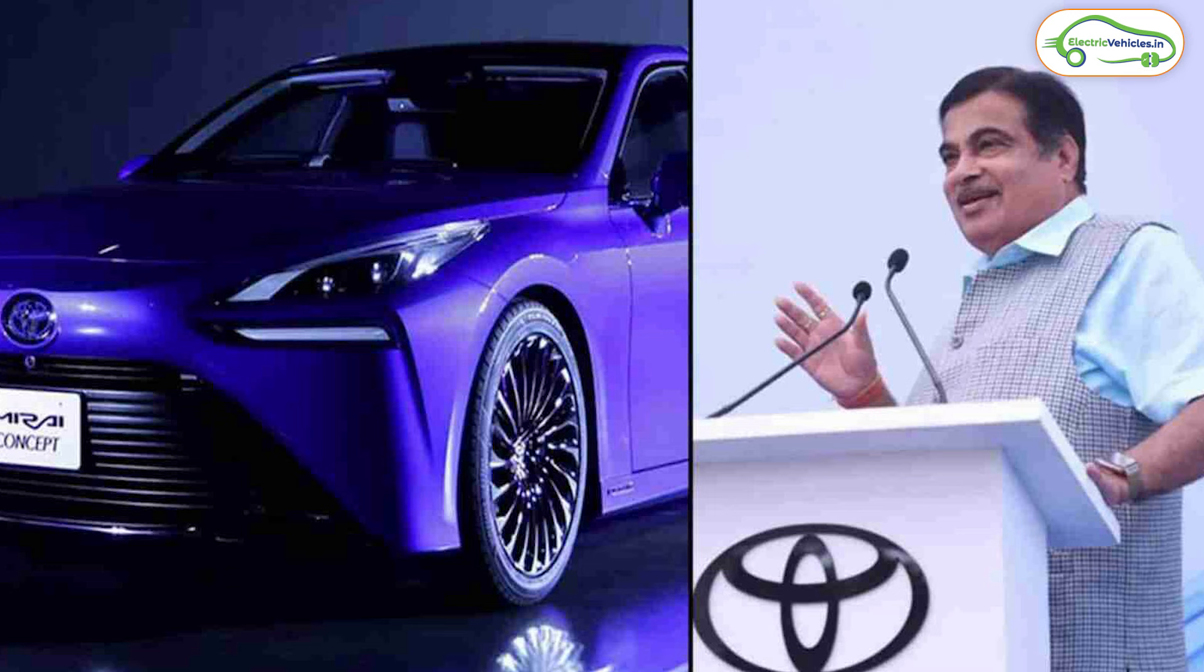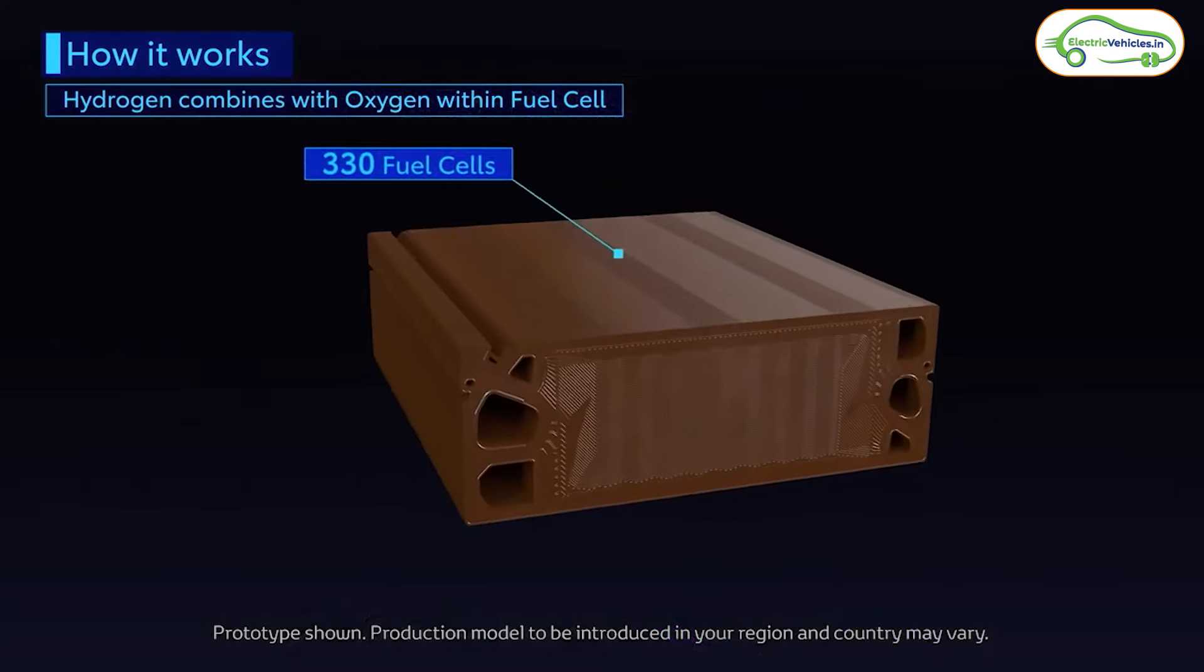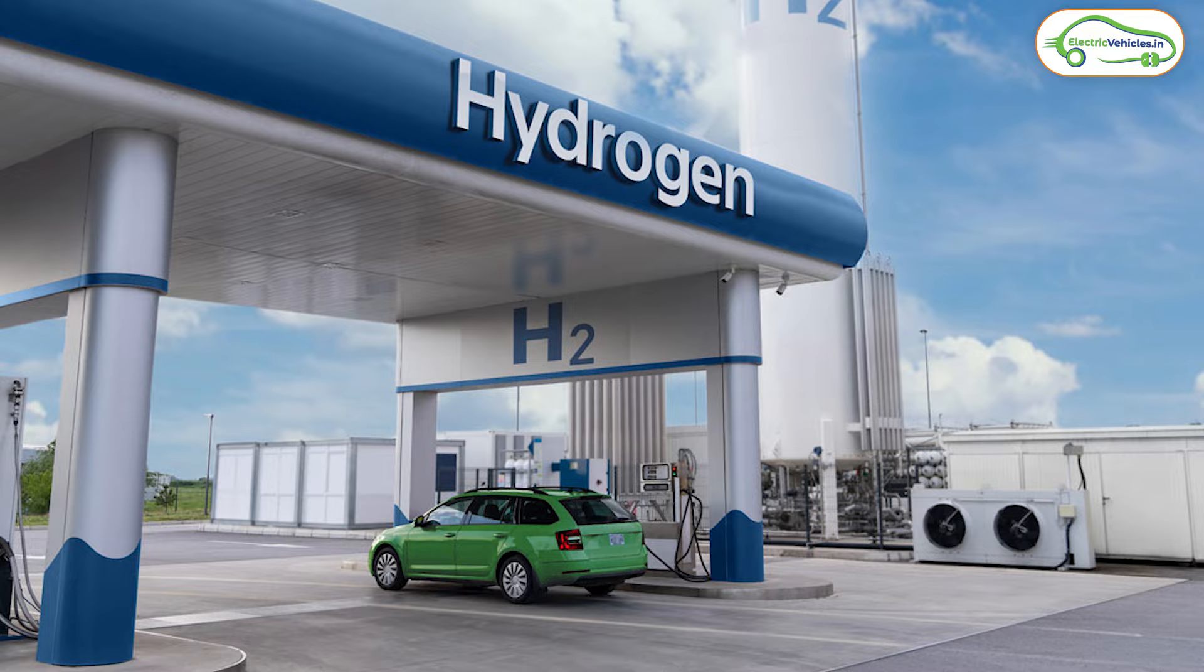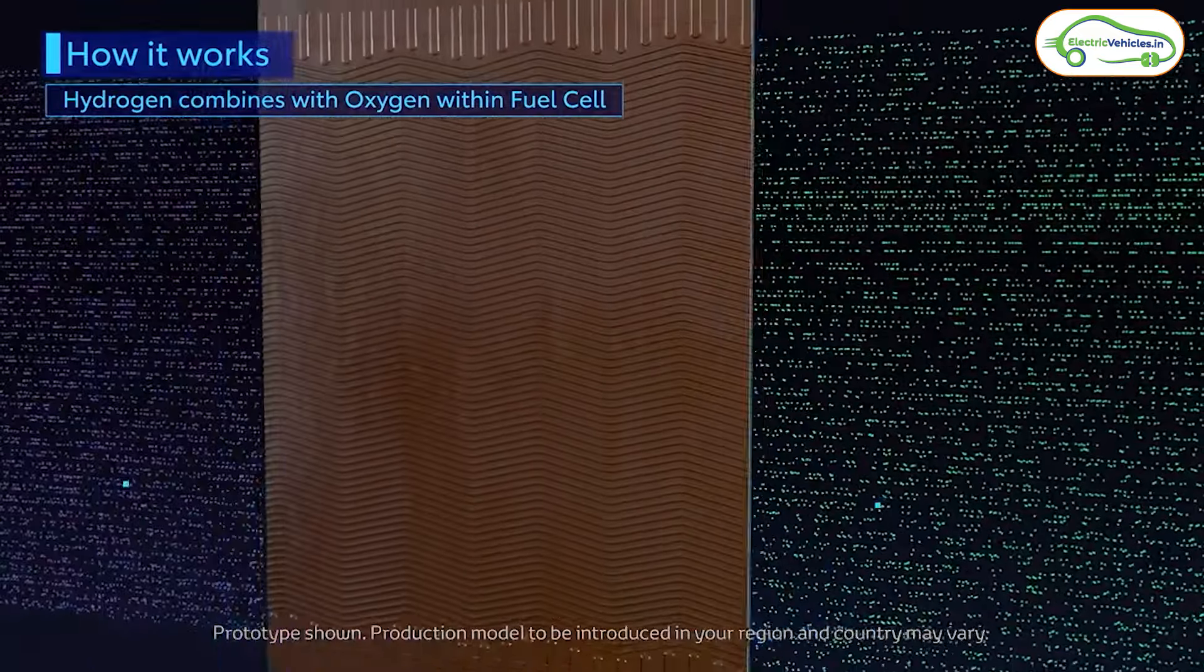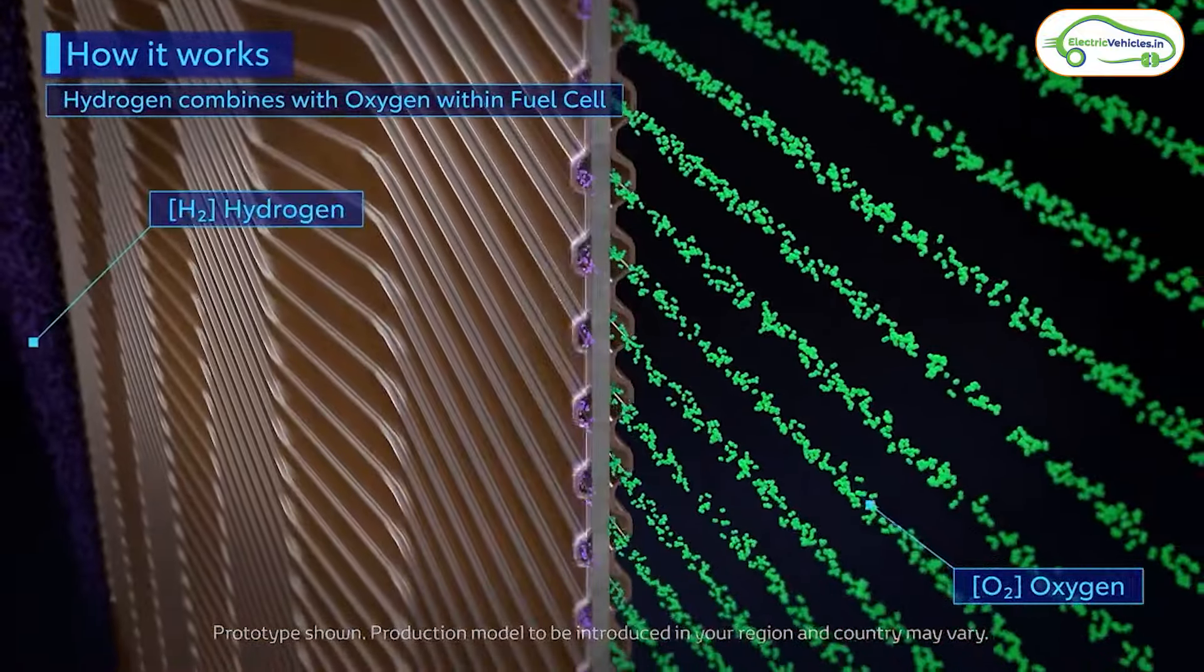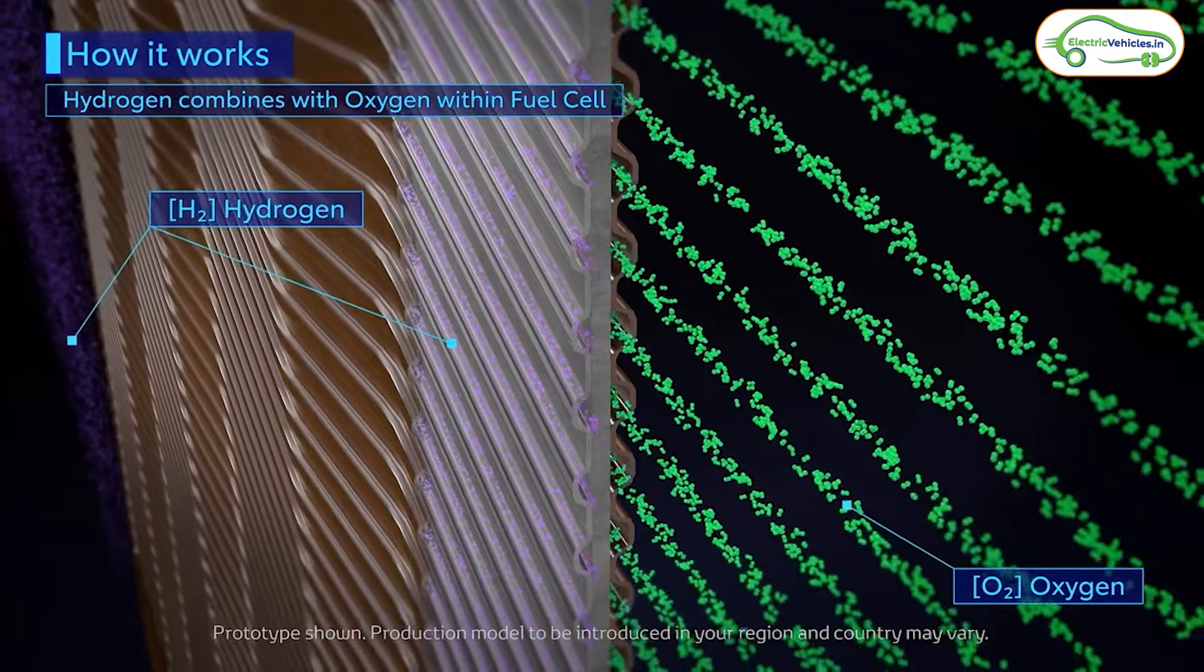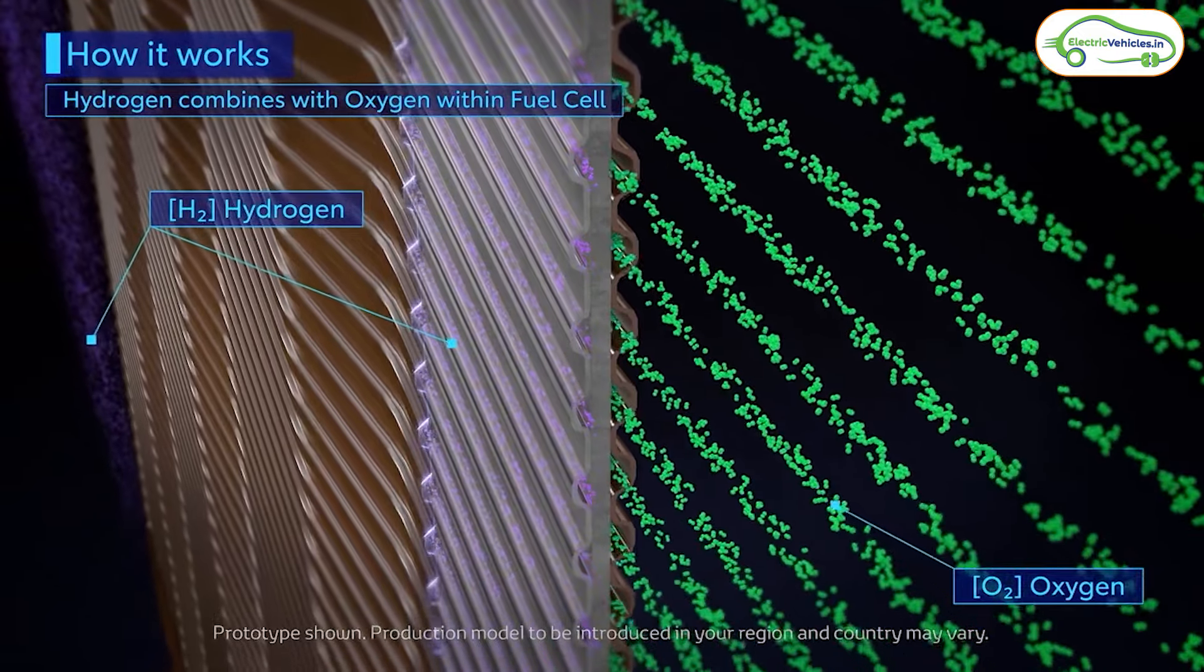Toyota has successfully made this hydrogen powered vehicle called Mirai. Our union minister Nitin Gadkari is using this Mirai car since a long time. The main drawback with these hydrogen vehicles is fuel stations. There are very limited number of hydrogen fueling stations available in India. This is the reason hydrogen vehicles are not popular in India till now.